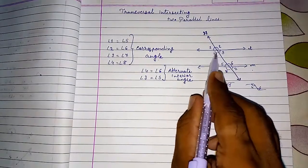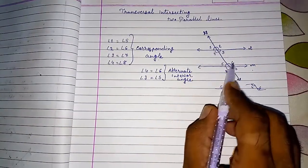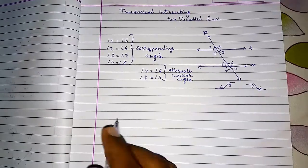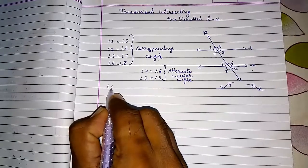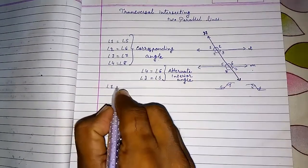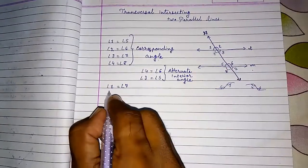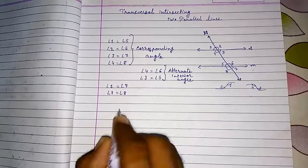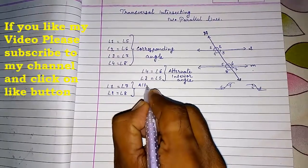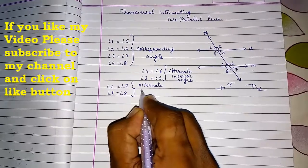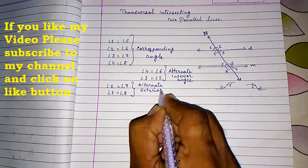Interior angles lie between the two parallel lines; exterior angles are outside them. Exterior angles also have a relationship: angle one equals angle seven, and angle two equals angle eight. These are also equal, and the reason is alternate exterior angles. Alternate interior and alternate exterior angles are on opposite sides of the transversal.